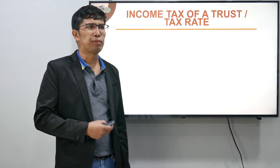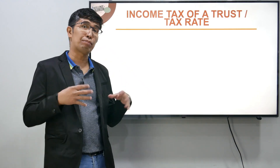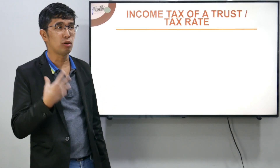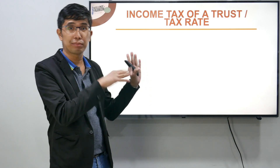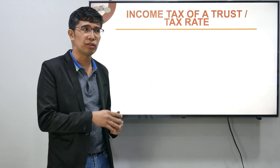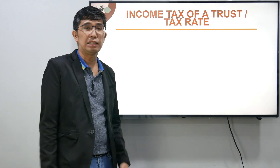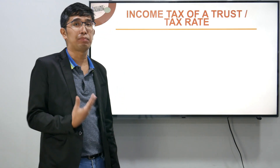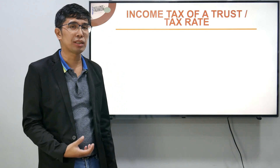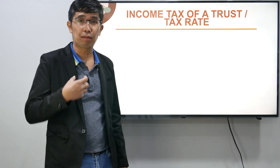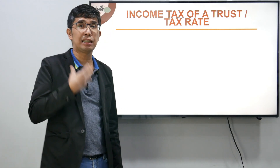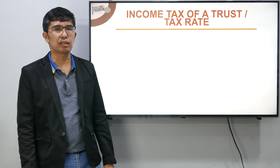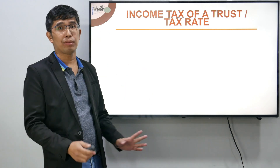Ano bang kinalaman ng pinag-uusapan natin sa income taxation? Pansinin: ang tinatransfer ng trustor or grantor or donor ay kunwari apartment — yung nasa picture. Dahil apartment yun, probably it is an income-generating property. Dahil income-generating property, the moment na may income, there must be a corresponding income tax. Kaya nagkakaroon tayo ng topic na income tax of a trust. So how do we tax yung trust agreement, between the grantor and the trustee?